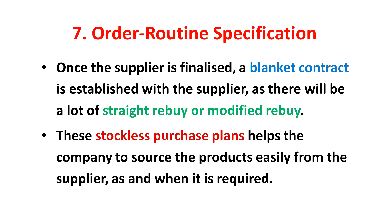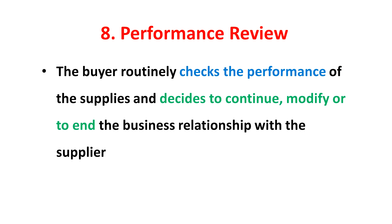The seventh stage is Order Routine Specification. In business buying, there is a closer relationship between the buyer and the supplier. Once the supplier is finalized, a blanket contract is established, as there will be a lot of straight buys or modified rebuys. These stockless purchase plans help the company to source the product easily from the supplier as and when it is required.